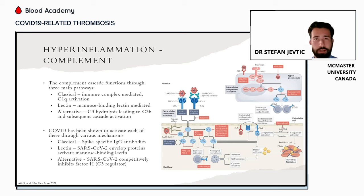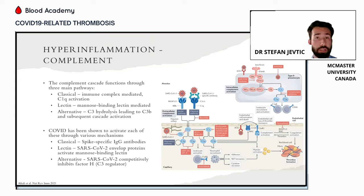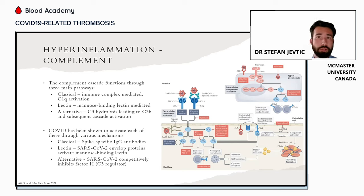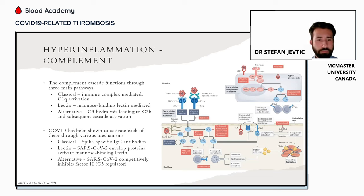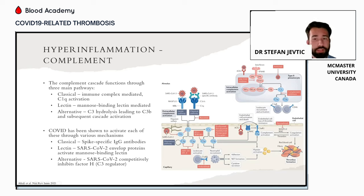COVID has been shown to activate all three of these pathways. In a small cohort of COVID-19 patients, circulating levels of the C4D complement protein were elevated, suggesting spike-specific antibodies may activate the classical pathway. SARS-CoV-2 can also directly bind to mannose-binding lectin to activate the lectin-based pathway. Finally, the virus can bind to heparin sulfate on cells and thereby inhibit factor H — which is an inhibitor of complement — thus promoting activation of the alternative complement pathway.